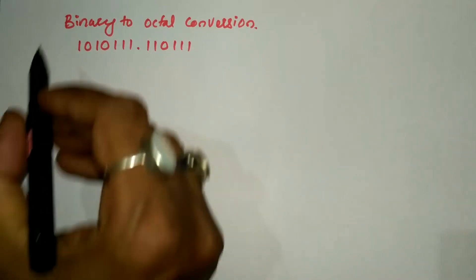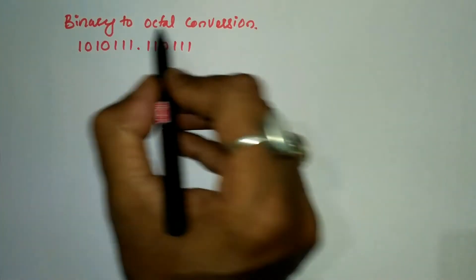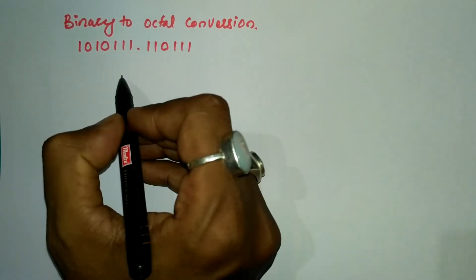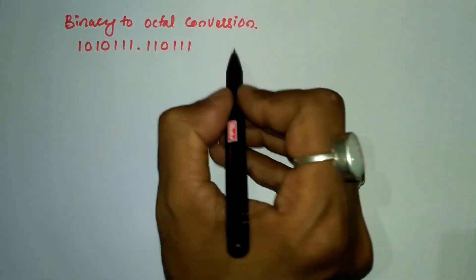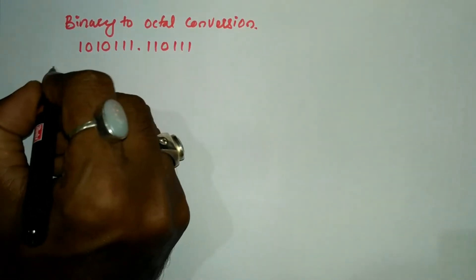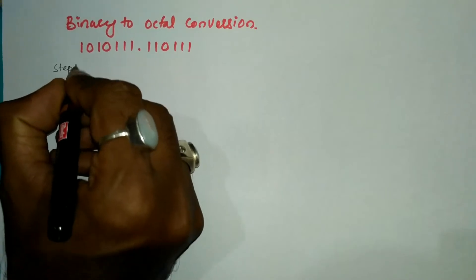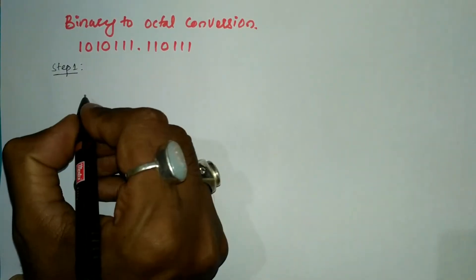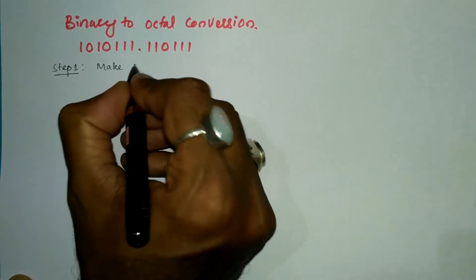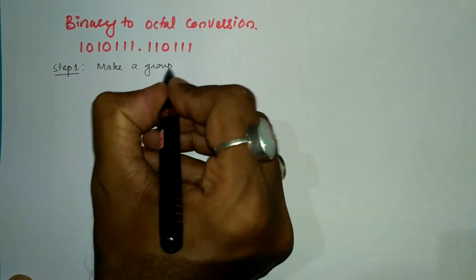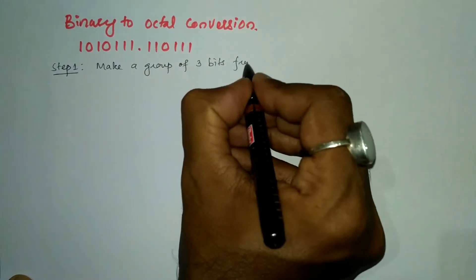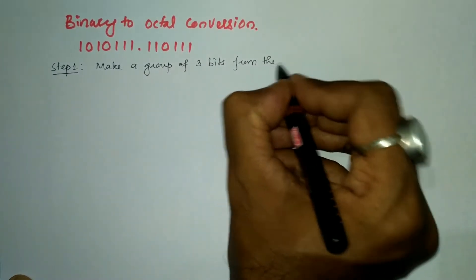Hello viewers. In this video, we are going to study binary to octal conversion. We have already been given a binary number that we need to convert into its octal equivalent. So let us write the steps. Step one: make a group of three bits from the binary point.